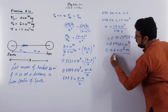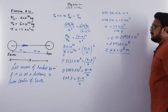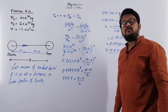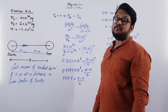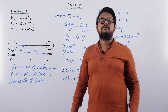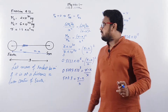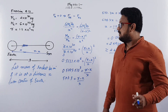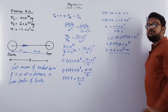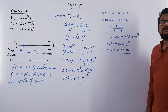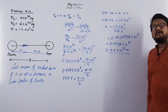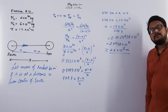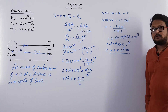So at this distance of approximately 2.6 × 10⁸ meter from the Earth, the gravitational force acting on the rocket due to Earth will be equal to the gravitational force acting on the rocket due to the Sun. Hence the resultant force will be zero.